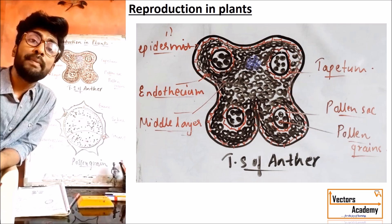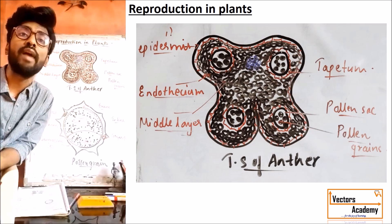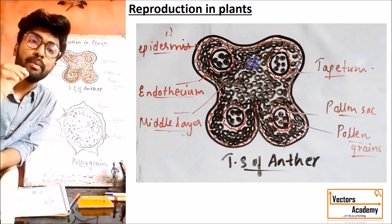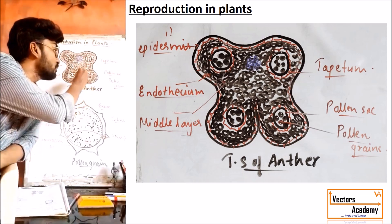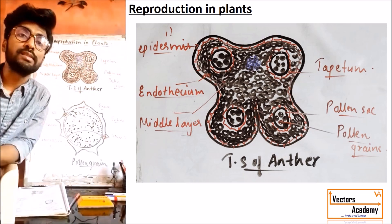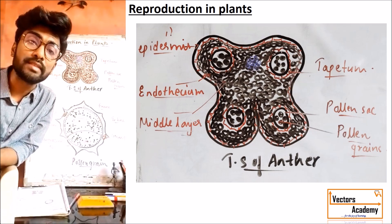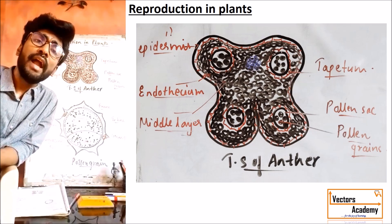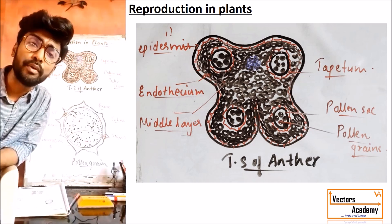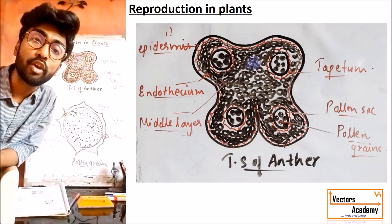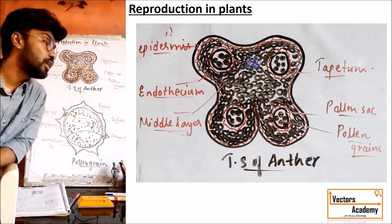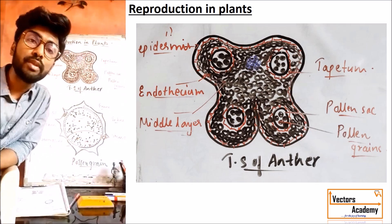The thickening and fibrous nature of the endothecium plays an important role in the dehiscence of anther. Dehiscence is the process where the anther ruptures during maturity to release the pollen grain from the pollen sac. The endothecium also plays an important role in the formation of a chemical component called sporopollenin, which is a component of the exine of the pollen grain. Exine is the outermost rough layer of the pollen grain.